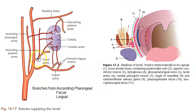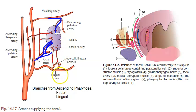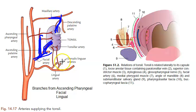From the facial artery you have the tonsillar artery — this is the main branch. From the facial artery you also have the ascending palatine artery. From the maxillary artery you have the descending palatine artery.